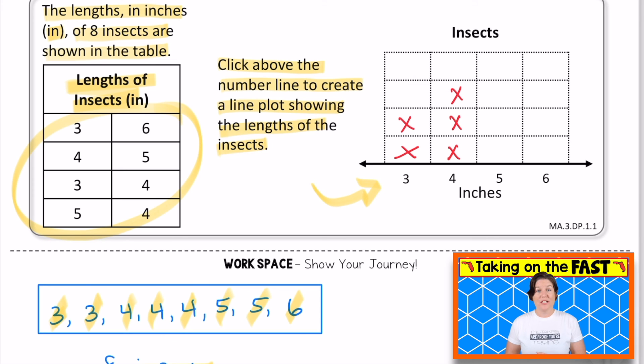We need three X's because there are three insects that have four inches. How many X's do we need above the five? Two, one, two. And how many insects were six inches long? Just one. So I'm just going to fix this X right here. So your line plot should look just like this.